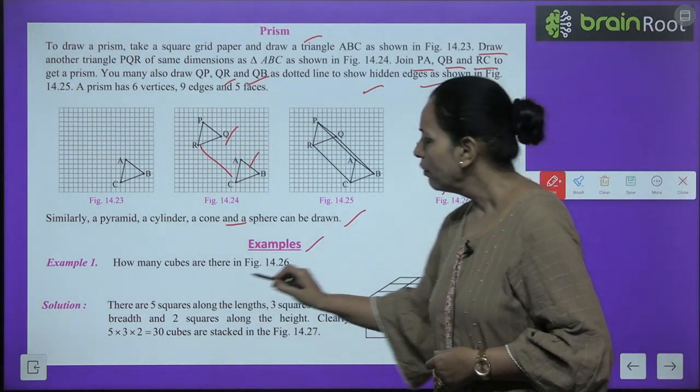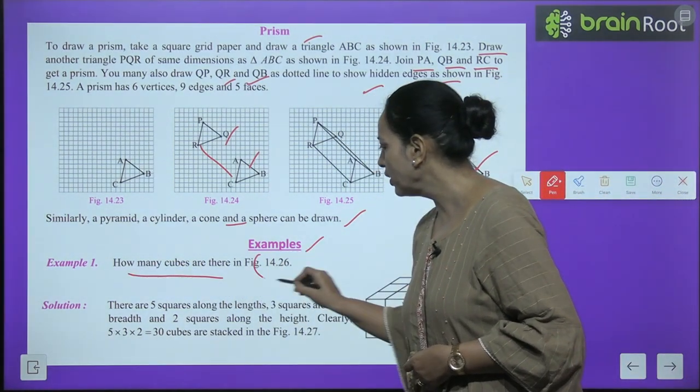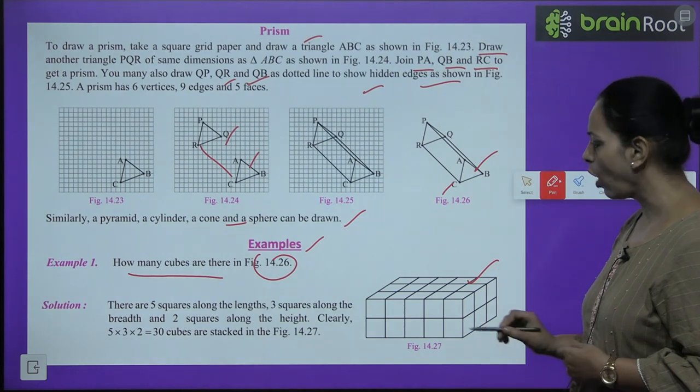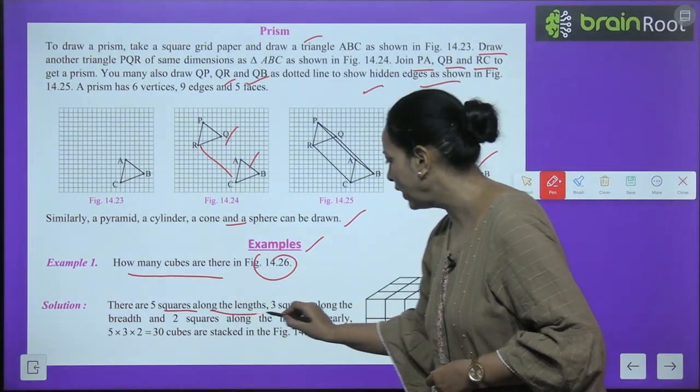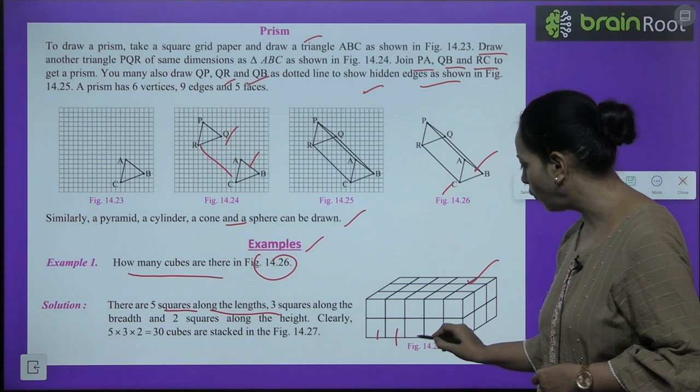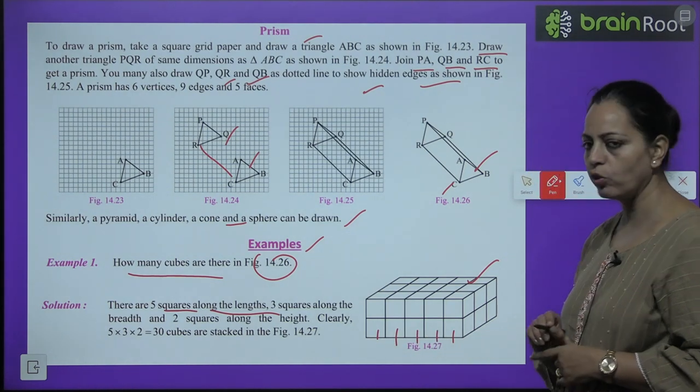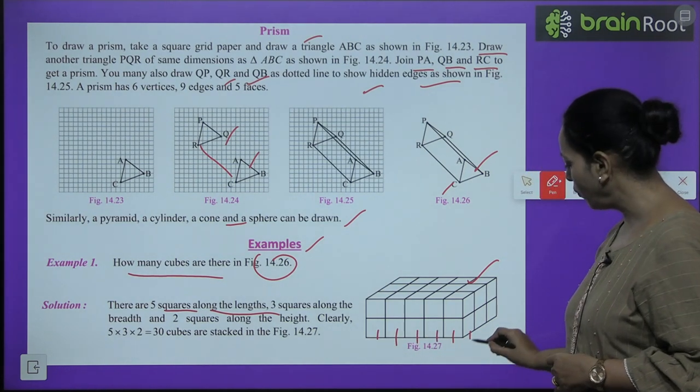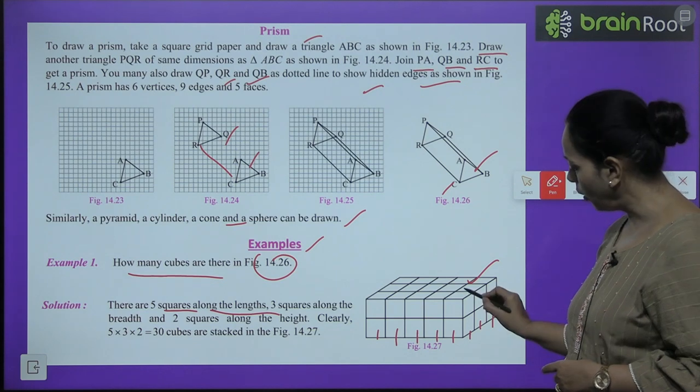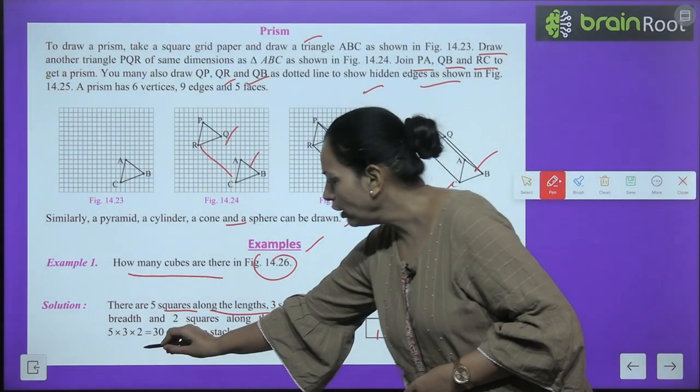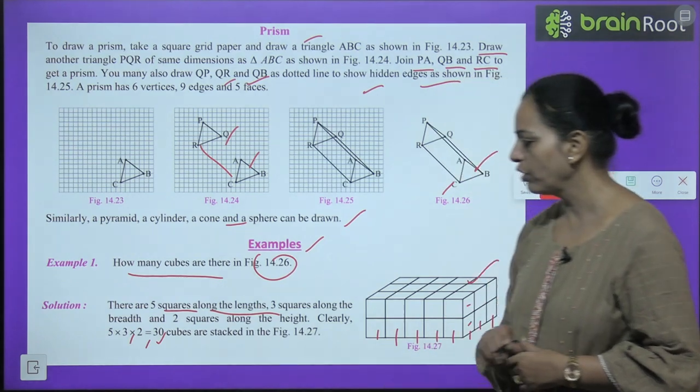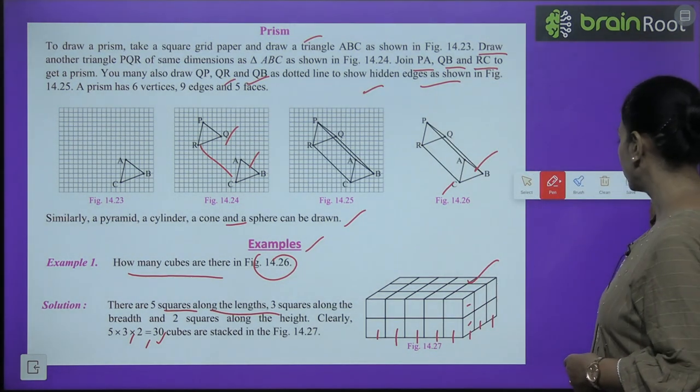Example: How many cubes are there in this figure? A figure is given - how many cubes are there? There are 5 squares along the length. Count along the length: 1, 2, 3, 4, 5 squares. Along breadth: 1, 2, 3. Along height: 1 and 2. So you will do 5 × 3 × 2, which equals 30 cubes.